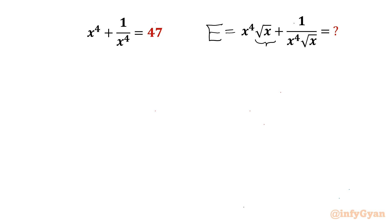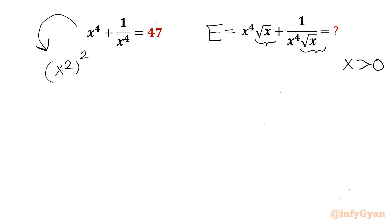Since square root x is involved, x should be positive for real solutions. I will begin with the given equation. I can write x⁴ as (x²)² plus 1 over x⁴, same way (x²)² in the denominator, equal to 47.